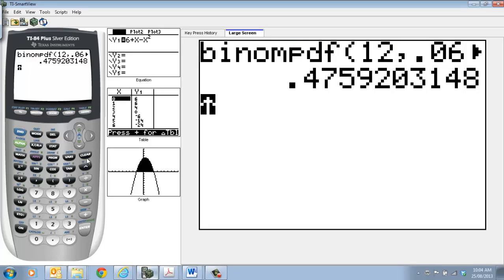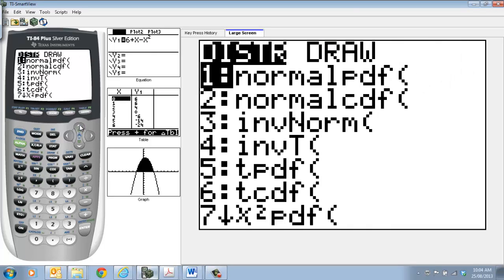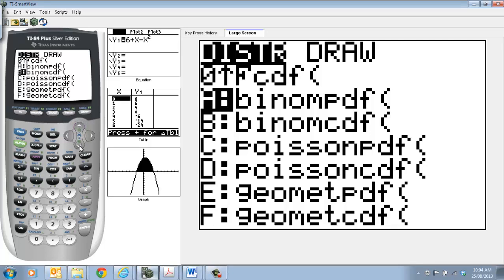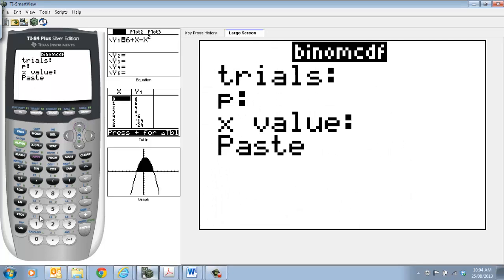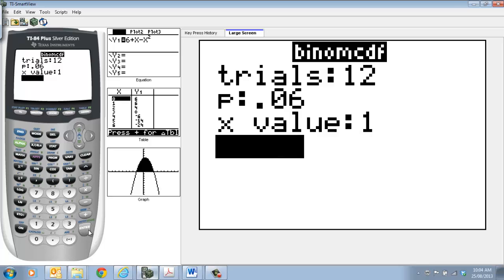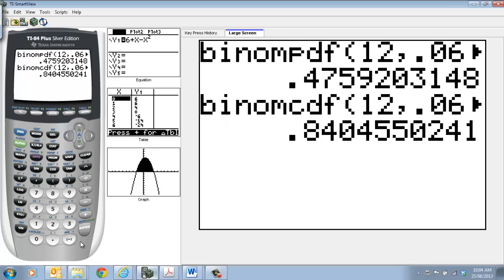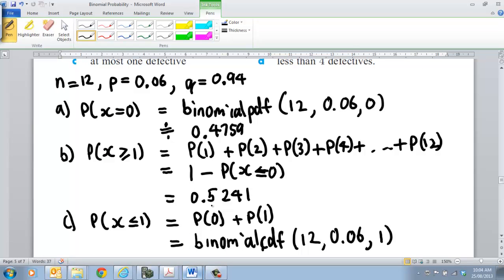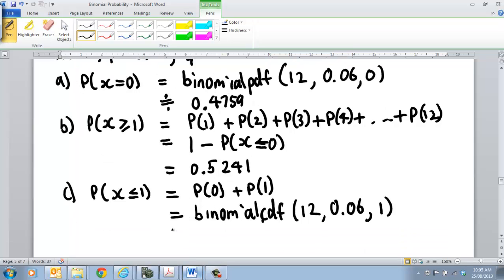So again, to our distribution, using the up arrow is the quickest way to get to the CDF. We're going to put in 12 there, 0.06, and we're looking at 1. That will work out 1 and 0 for us. So we've got 84.05% chance of getting at most 0 or 1. So that's approximately equal to 0.8405.